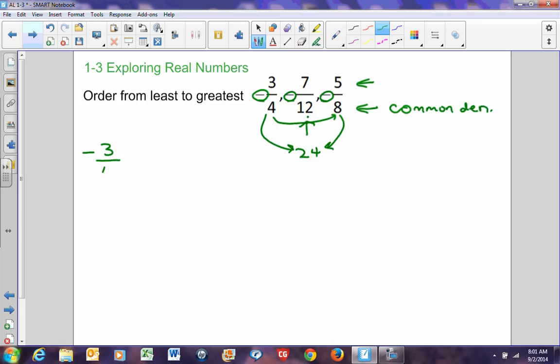So, if I look at negative 3/4 and I transfer that to 20/4ths, I know that in order to get 4 to 24, I have to multiply it by 6. So, if I multiply negative 3 by 6, I get negative 18. If I again look at negative 7/12, to get to 24, I have to multiply 12 by 2. So, if I multiply 7 by 2, I'm going to get negative 14. And last but not least, if I look at negative 5/8, to get 8 to 24, I have to multiply it by 3. So, negative 5 times 3 is negative 15.